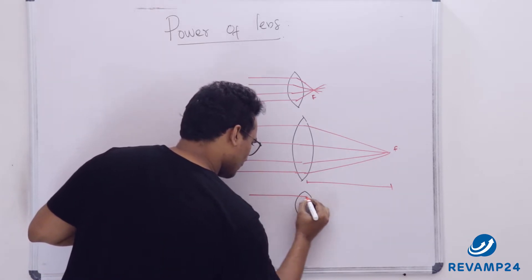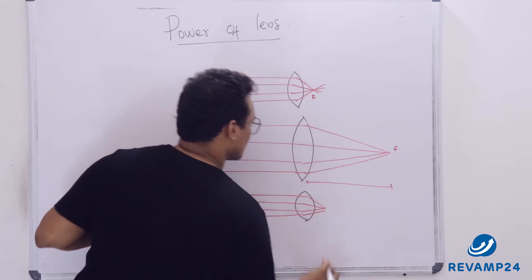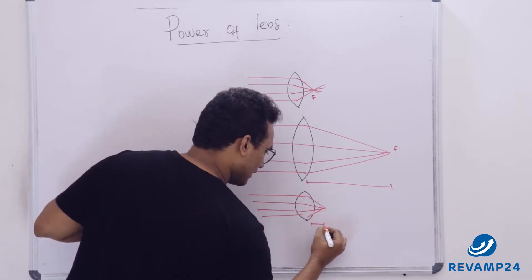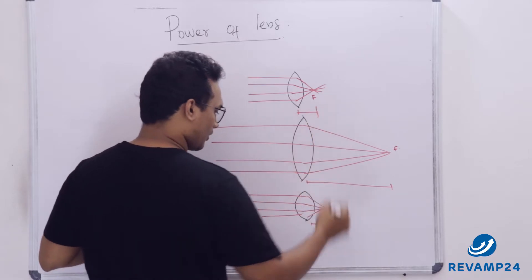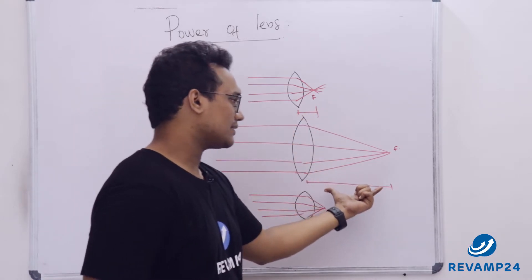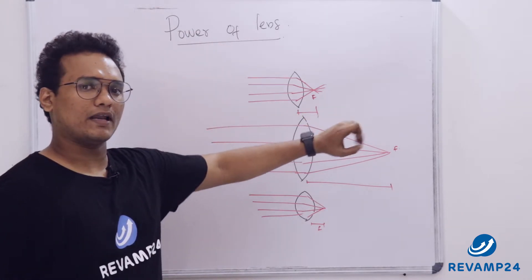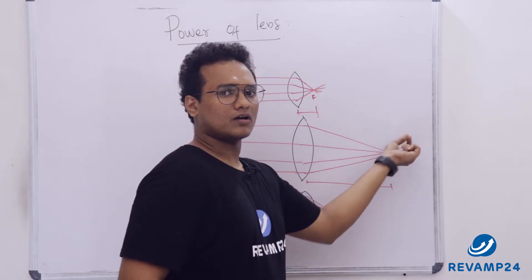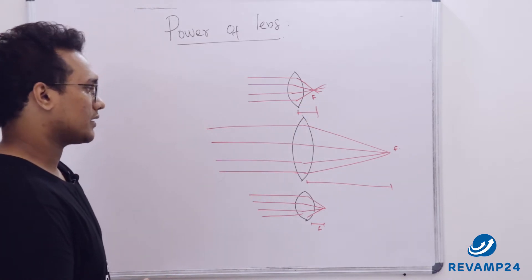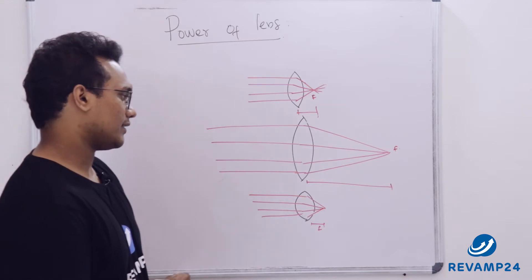And in this case, rays would come and be focused at a very short distance compared to the second lens. This is almost equal to the first, but compared to the second, the focal length is very less. So this lens has a smaller focal length, this has an intermediate focal length, and this has a large focal length. Whenever rays come parallel to the principal axis, the large-focal-length lens takes the longest distance to concentrate them, the intermediate takes comparatively shorter, and the small-focal-length lens takes the very shortest distance to focus all parallel rays after refraction at a common point.